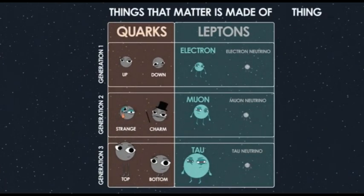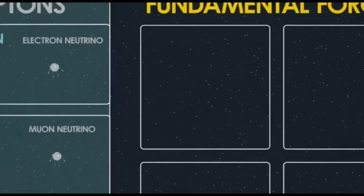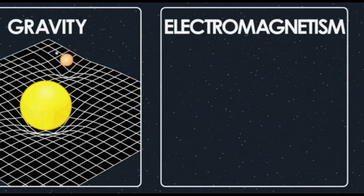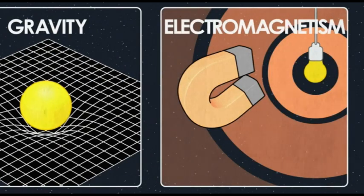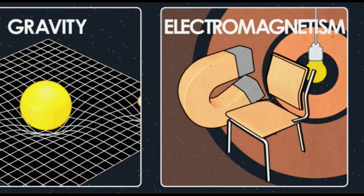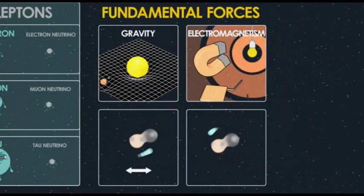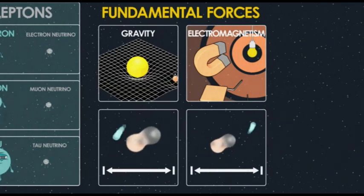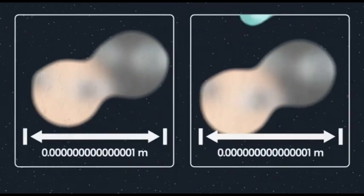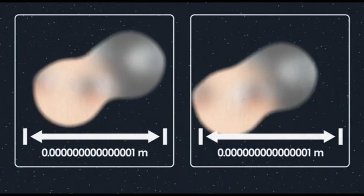There are four known fundamental forces: gravity, which we know from everyday life; electromagnetism, which covers magnets, electricity, and light, and is also what holds atoms together — it's what stops the chair you're sitting in from falling apart; and then two other forces that are very short-range, only acting over the width of an atomic nucleus, which is about a millionth of a billionth of a meter.